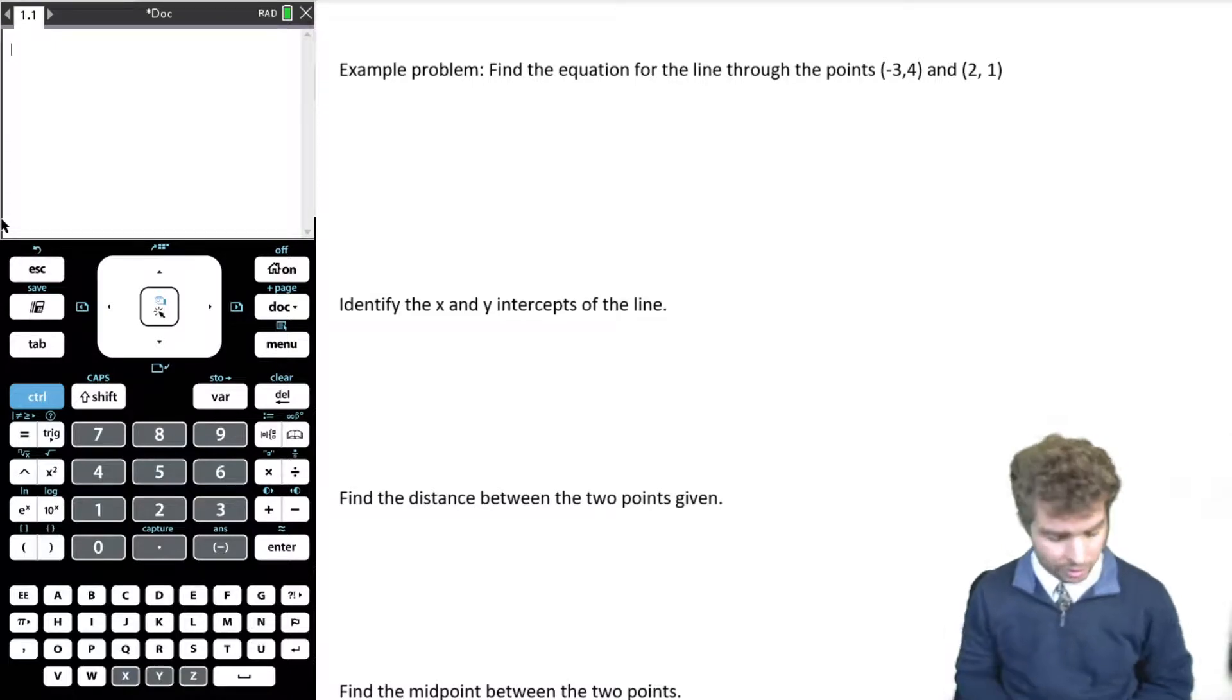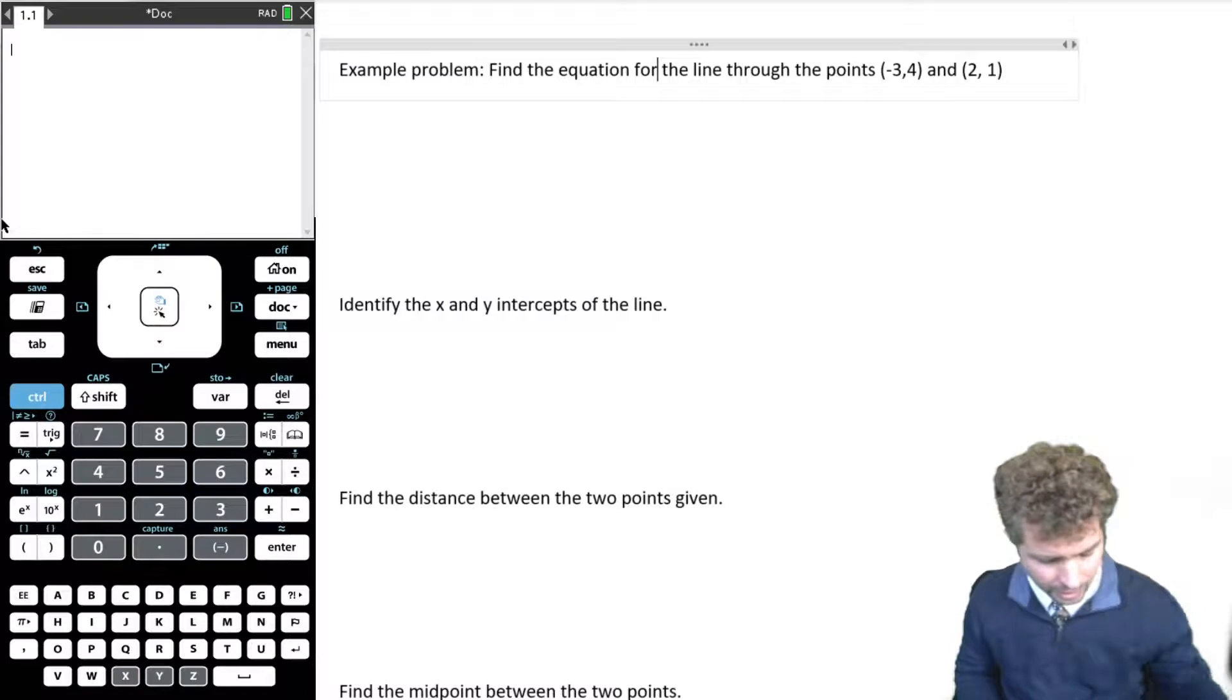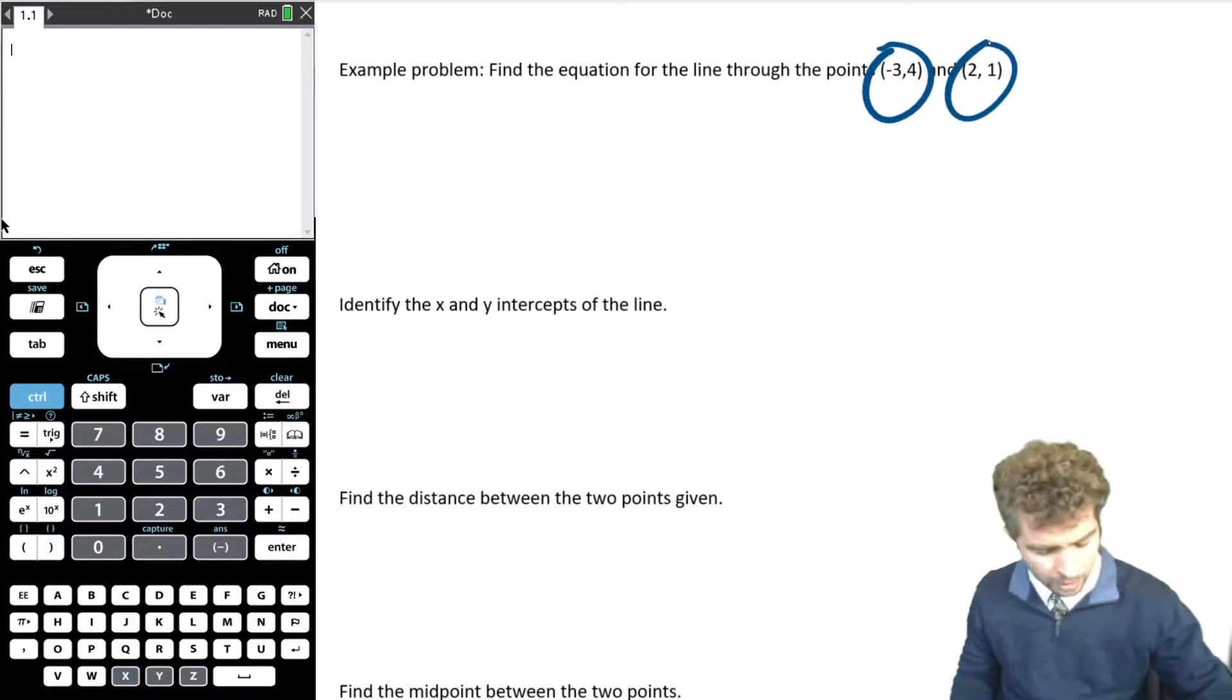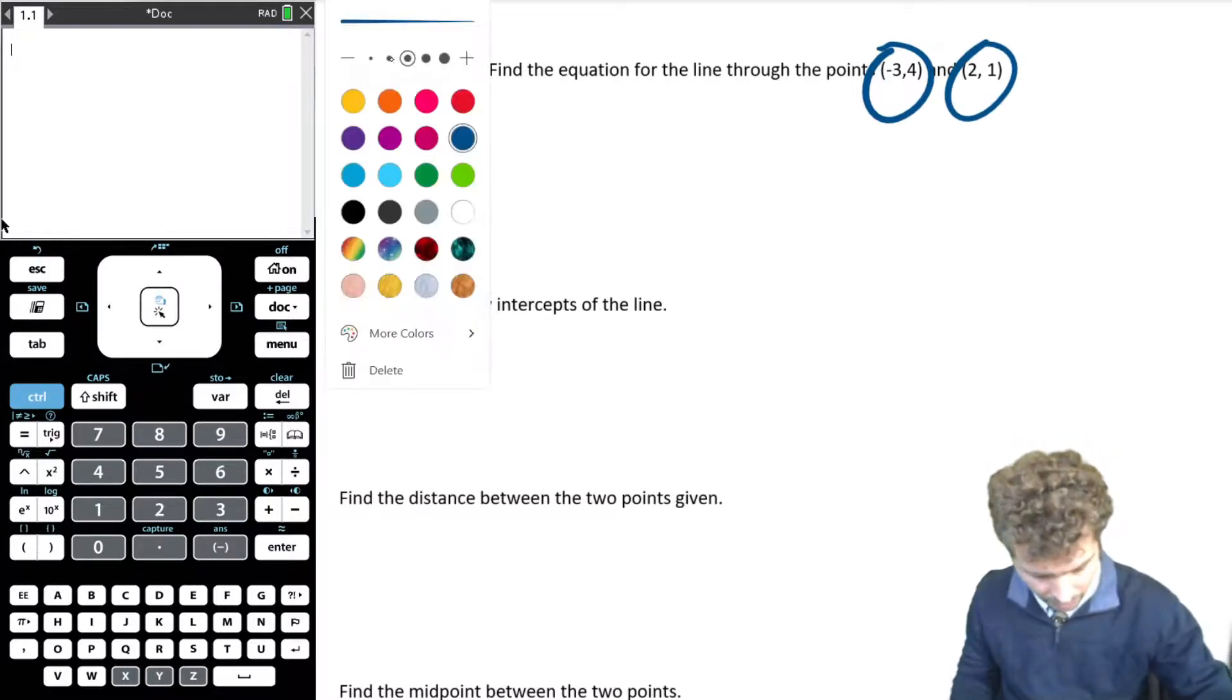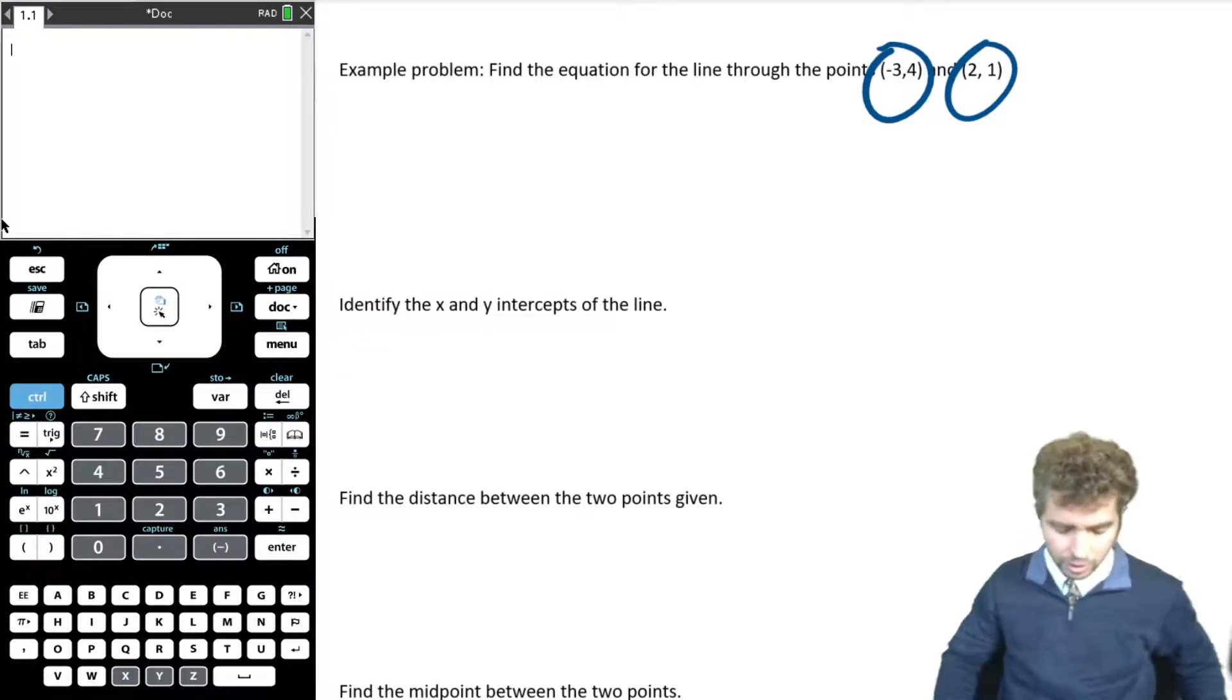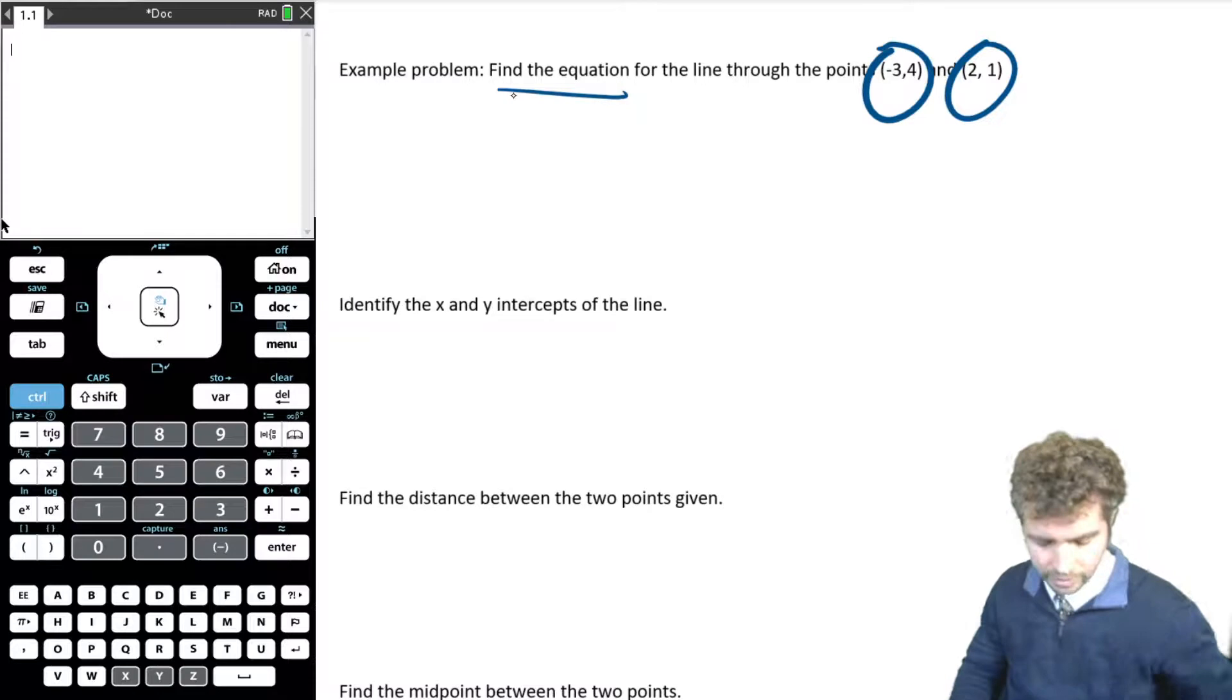So let's just jump right into it. The problem gives us these two points that we're going to be working with, negative 3, 4, and 2, 1. Alright, so those are our two points, and the first thing we're asked to do is to find the equation of the line through those two points.